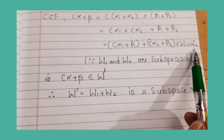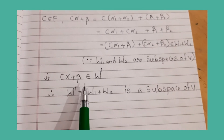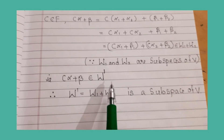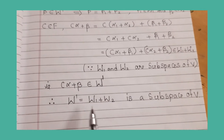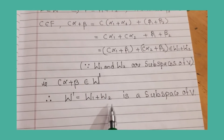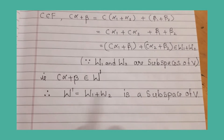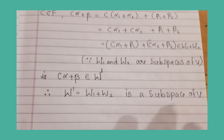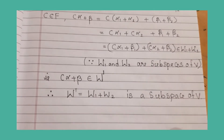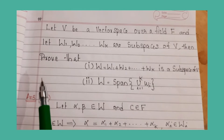Therefore c·alpha + beta belongs to W', so W' = W1 + W2 is a subspace of V. The first problem is complete.